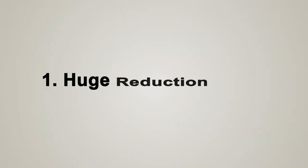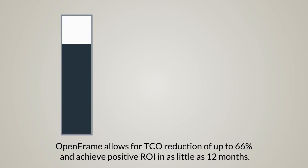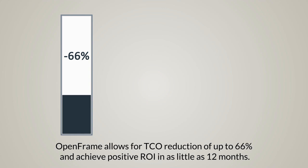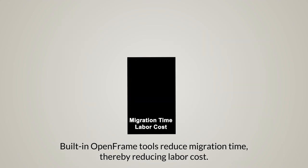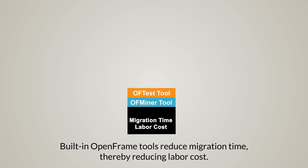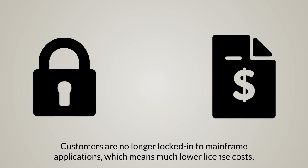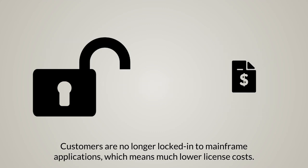Huge reduction in total cost of ownership. Re-hosting using OpenFrame allows enterprises to reduce TCO by as much as 66% and achieve a positive return on investment in as little as 12 months. This is made possible by using built-in OpenFrame tools, which reduce migration time, thereby reducing labor cost. Another reason is that customers are no longer locked into mainframe applications, which means much lower license costs.